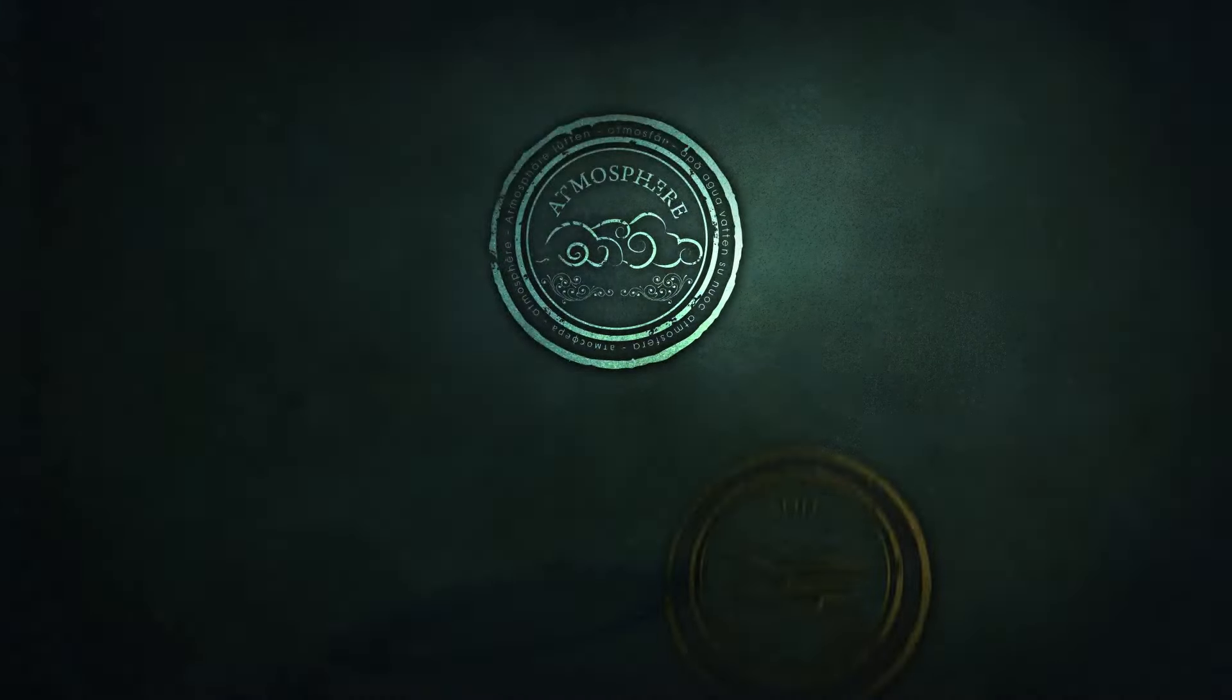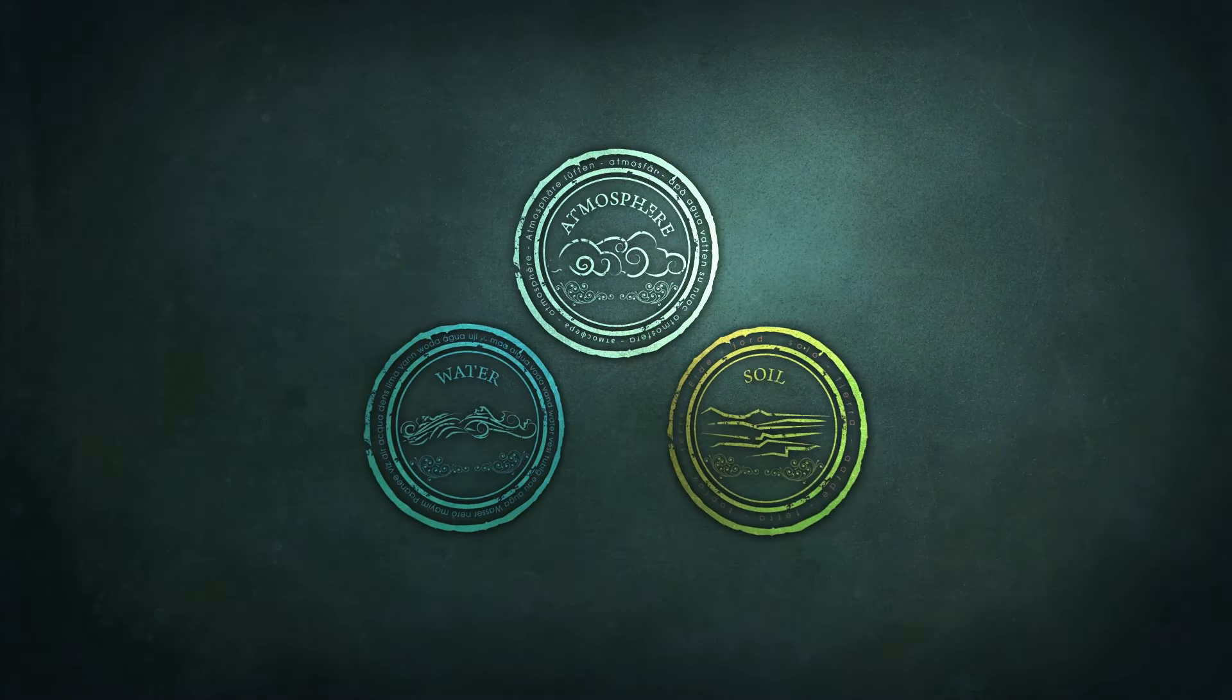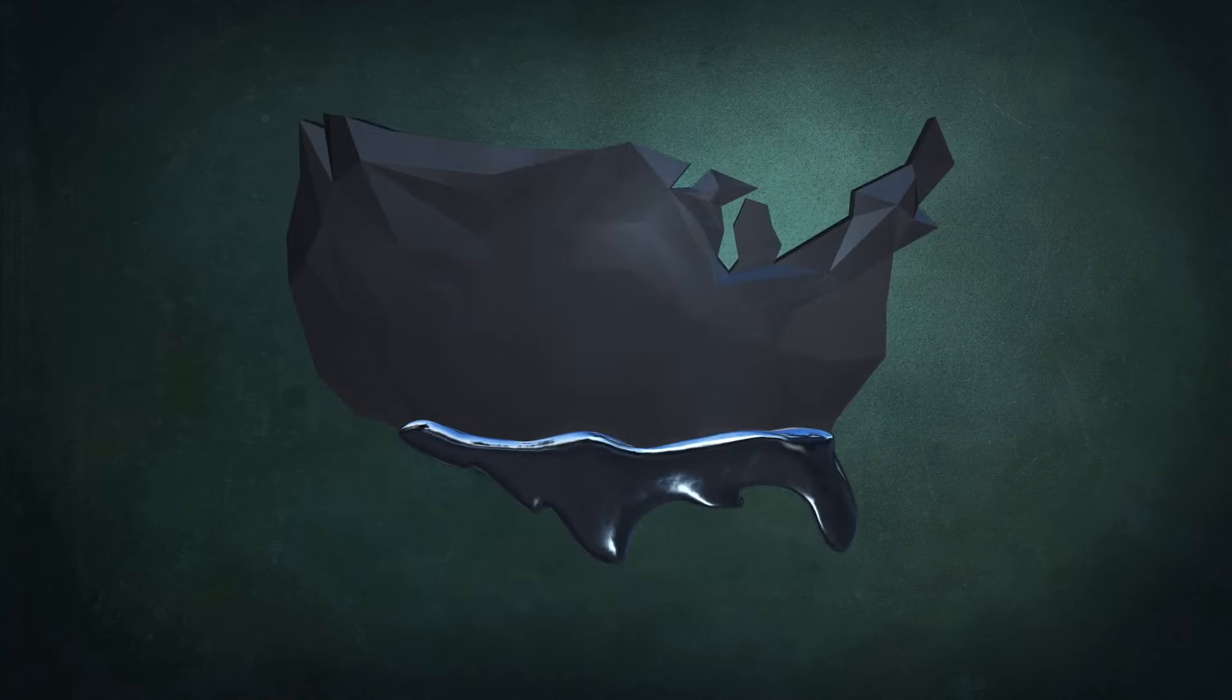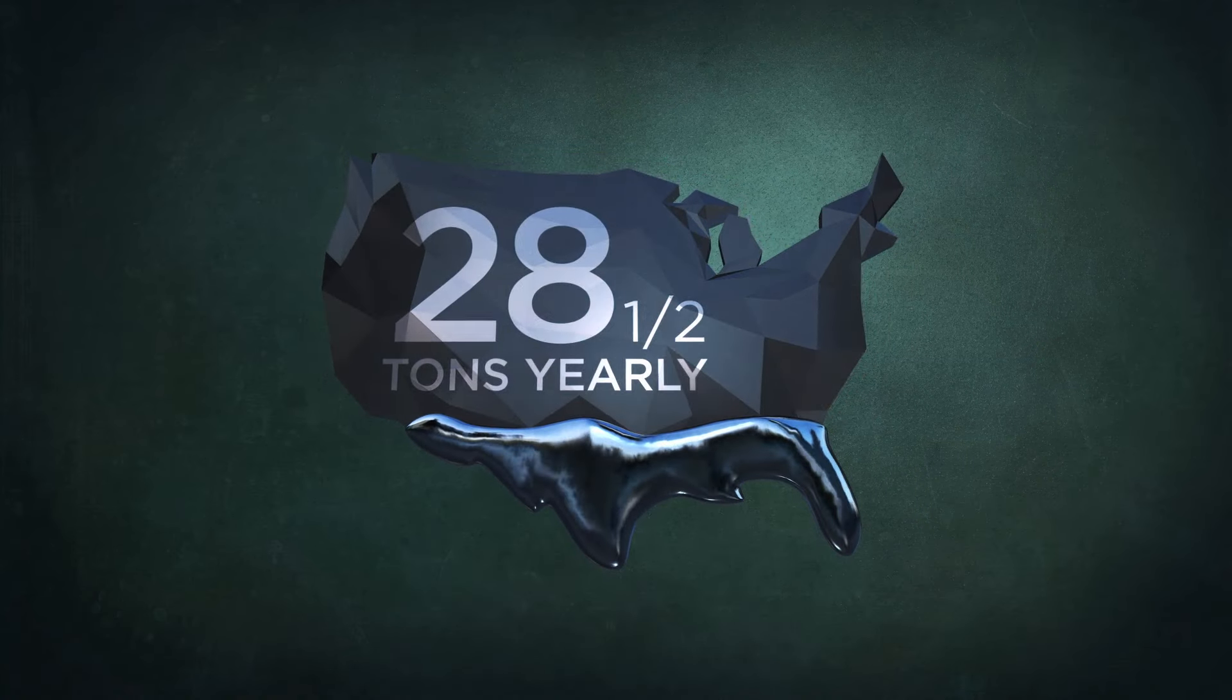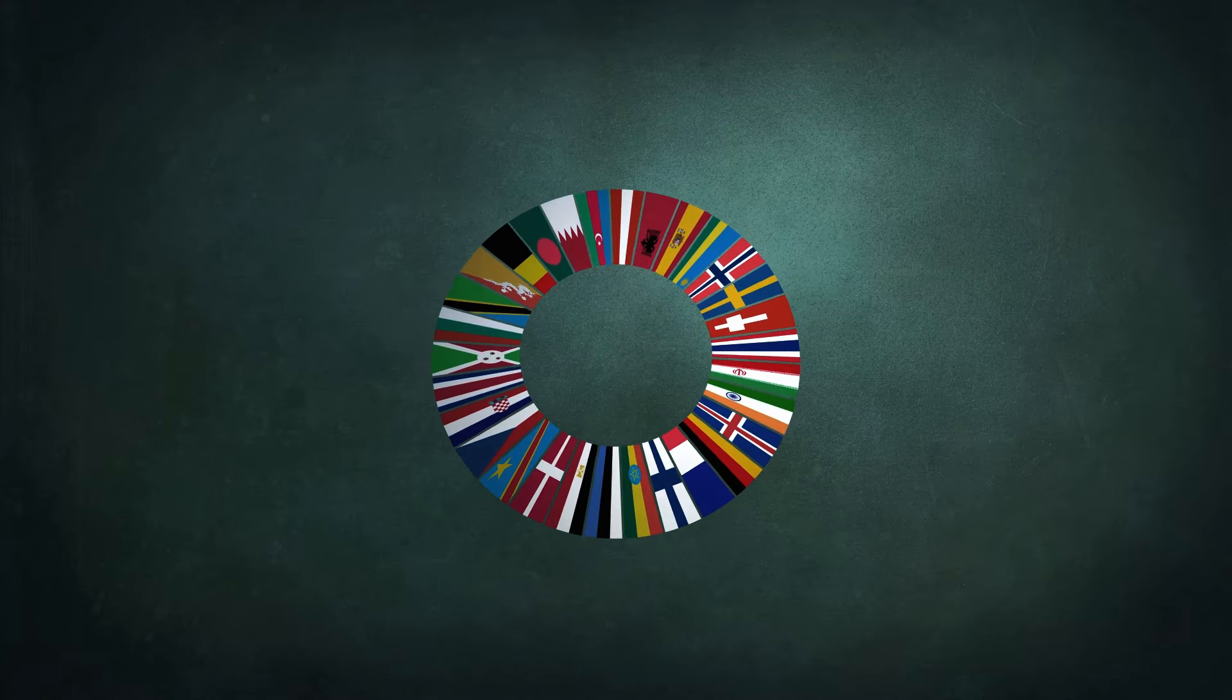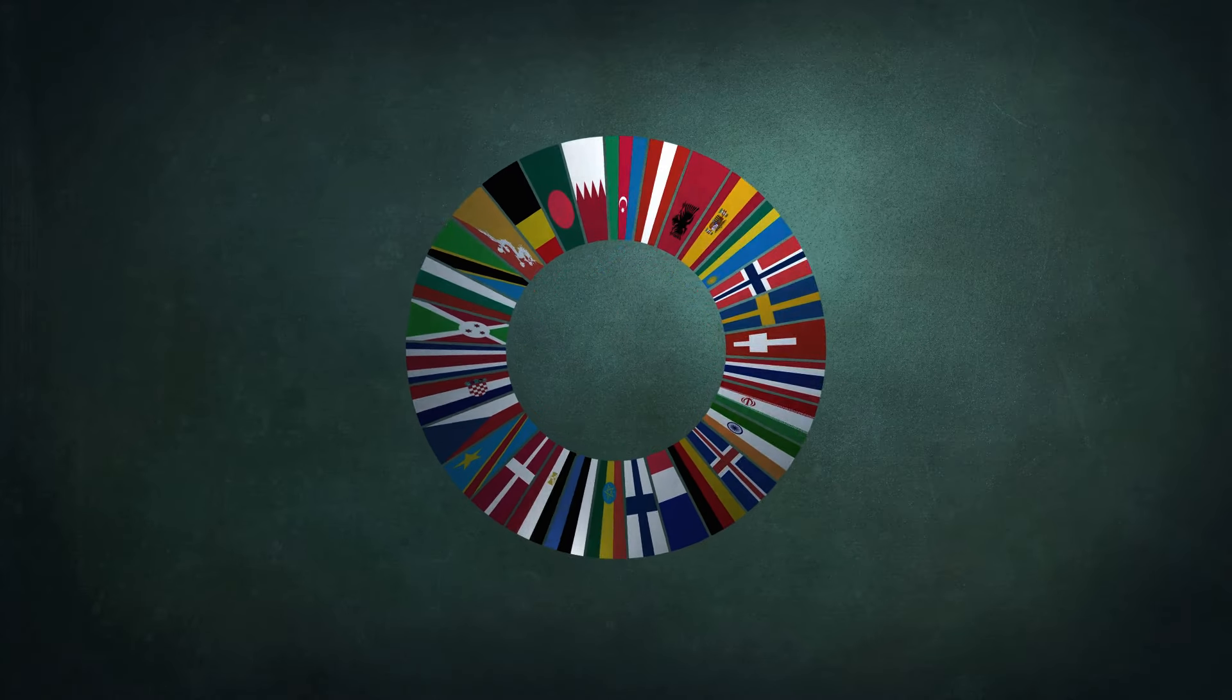When all the various pathways are accounted for, dental mercury from the United States contributes roughly 28.5 tons into the environment each year. The governments of the world are actively working together to reduce the amount of mercury released globally to protect human health.